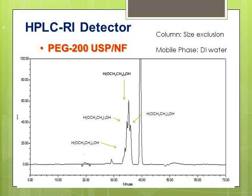The largest peak can be assigned to PEG with a molecular weight of 200. The peak to the right would be PEG with five monomers, and the peak to the left could be assigned to PEG with three monomers. I have not done LC-MS to verify this assignment, but it is most likely correct. This chromatogram is generated by size exclusion chromatography.